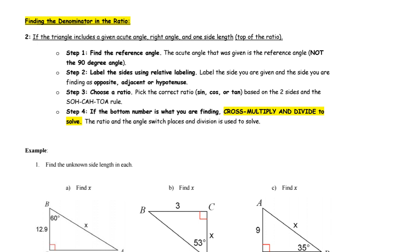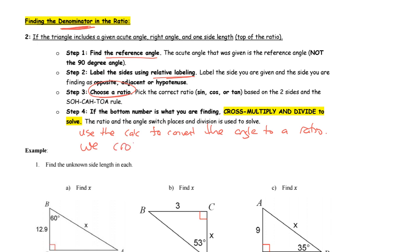Now we look at basically the same type of problem, but the unknown is in the denominator. The approach is the same — find the reference angle, use labeling to choose the ratio, use the calculator to convert the angle to a ratio, cross multiply — but there's one extra step: divide to get the answer. That final division is necessary because the unknown is in the denominator.